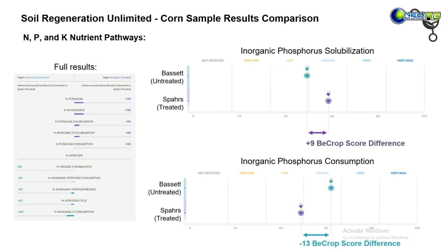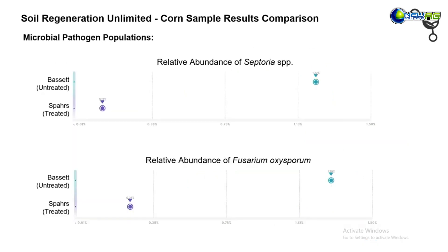We saw similar numbers in terms of improvement in those solubilizer populations. We also saw a drop in inorganic phosphorus consumption between the untreated and the treated. Consumption isn't always a bad thing, as microbes consuming these nutrients might go through the rhizophagy cycle and help reduce leaching, but it was interesting to see a 13-point decrease there. If plants are in demand of P and K, it may be beneficial to have lower levels of phosphorus consumers so there's more available to the plant.